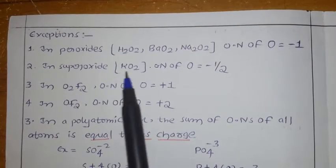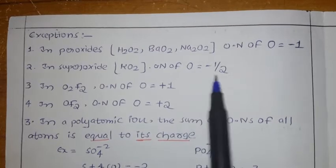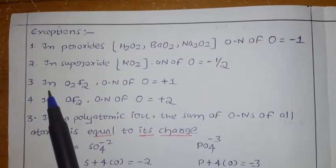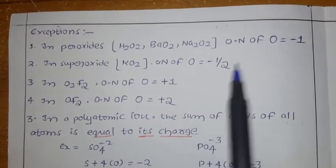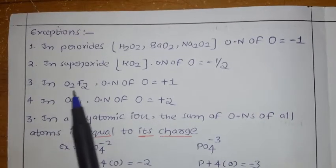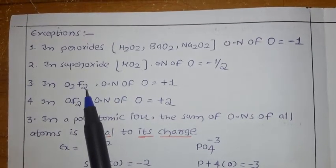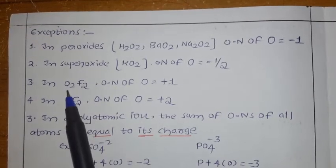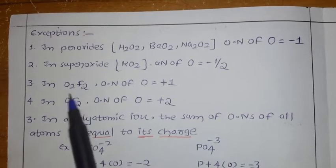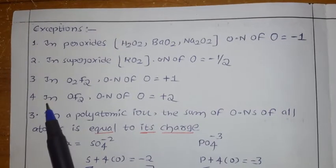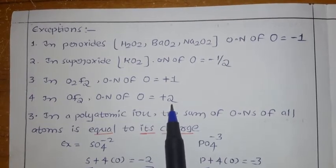In superoxides, such as potassium superoxide, the oxygen oxidation state is minus 1 by 2. In O2F2, the oxidation number of oxygen is plus 1, because fluorine has more electronegativity than oxygen — oxygen loses electrons, fluorine gains them. So oxygen has the oxidation number plus 1. In another example, in O2F2, the oxidation number of oxygen is plus 2. These exception cases you have to remember.